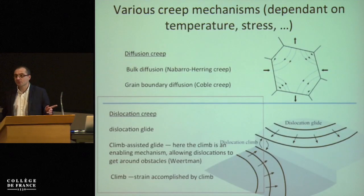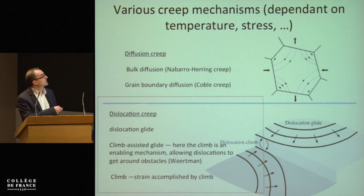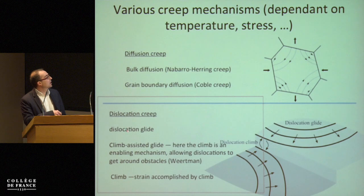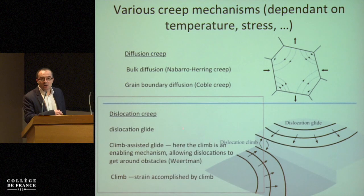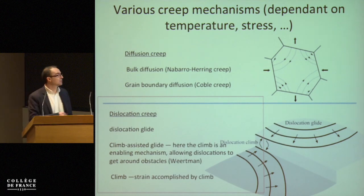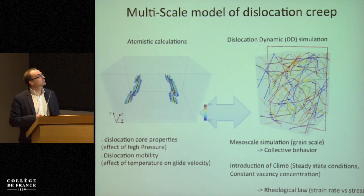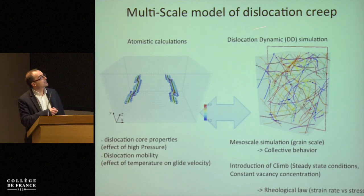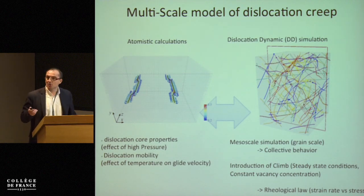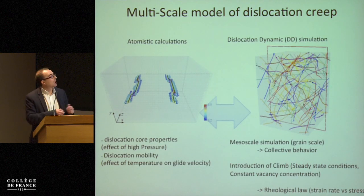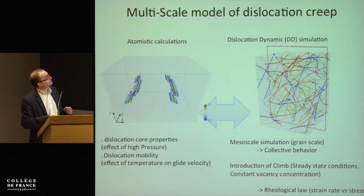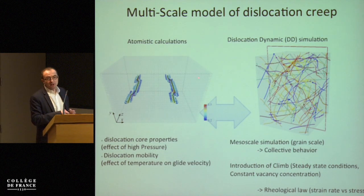Both processes occur in what we call dislocation creep. In the following I will mainly focus on dislocation glide and also on how climb can assist dislocation glide in further deformation. To do that, we are developing a multi-scale model for dislocation creep, coupling two different simulation scales — the first being atomistic calculation, where we see the defect in the simulation cell.